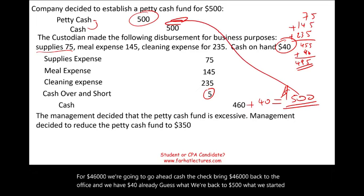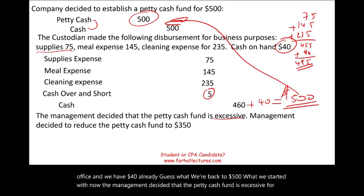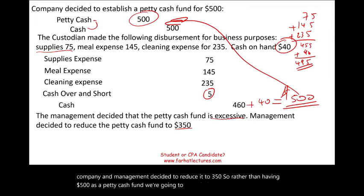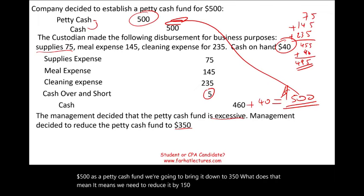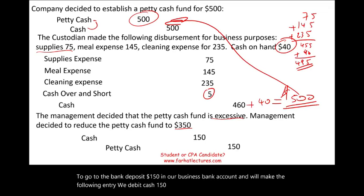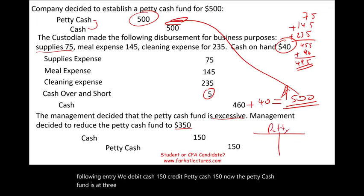Management then decided the petty cash fund is excessive and chose to reduce it to $350. Rather than having $500, we bring it down by $150. We ask the cash custodian to go to the bank and deposit $150 into the business bank account. The journal entry is: debit cash $150, credit petty cash $150. Now the petty cash fund is at $350.